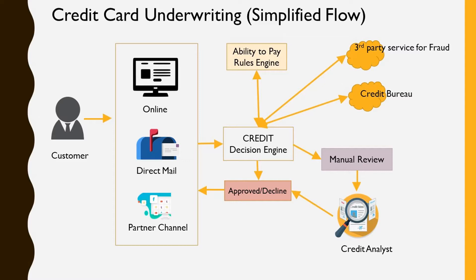They also make a call to third-party services to determine whether the customer has been involved in previous fraud. All this information is collected in the decision engine and fed into an ability-to-pay rules engine. This rules engine currently determines whether the customer will pay on time by taking the credit score and past customer information and producing a score, which is then used to approve or decline the customer.